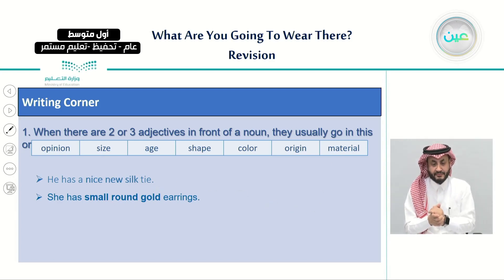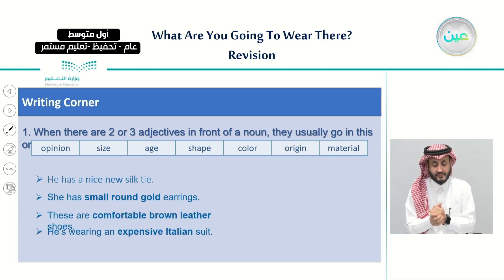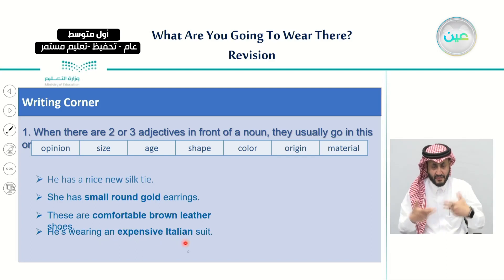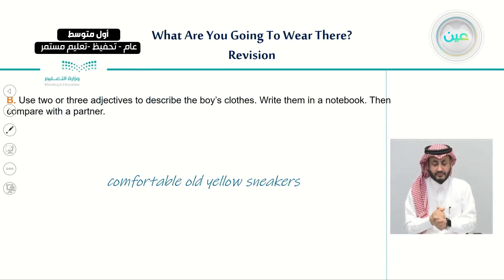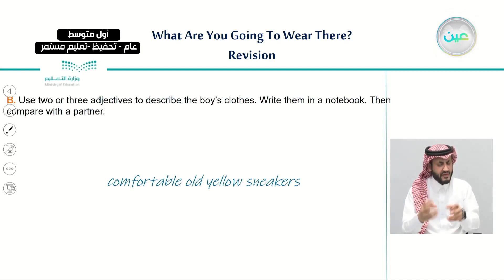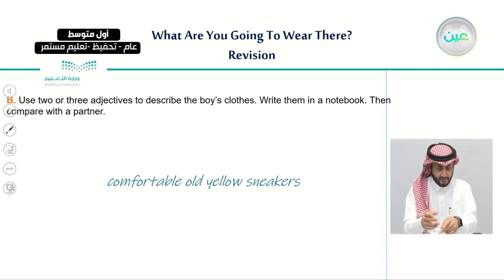This is how we use two or three adjectives when describing one object. We also have another example: he is wearing an expensive Italian — 'expensive' is the opinion and 'Italian' is the origin. We also had an exercise where you use two or three adjectives to describe the boy's clothes, write them in a notebook, then compare with a partner.